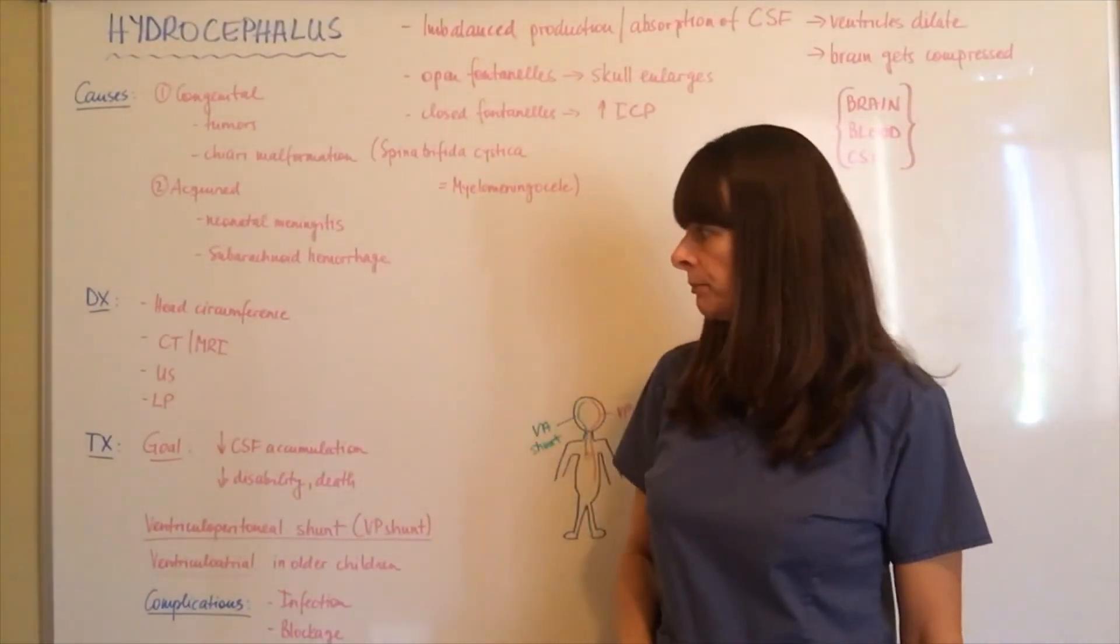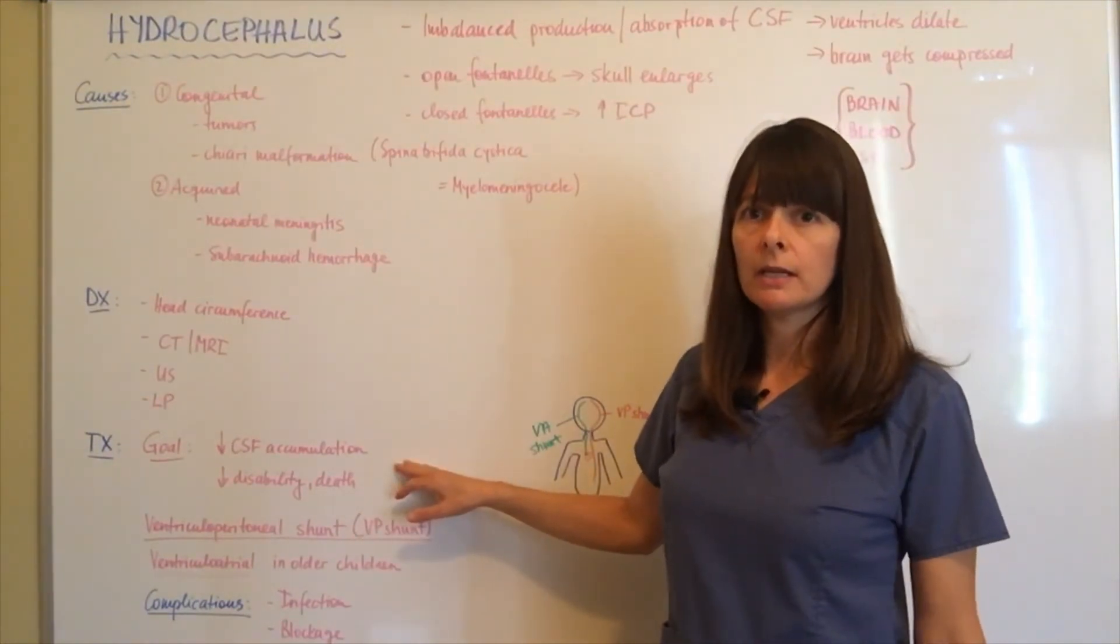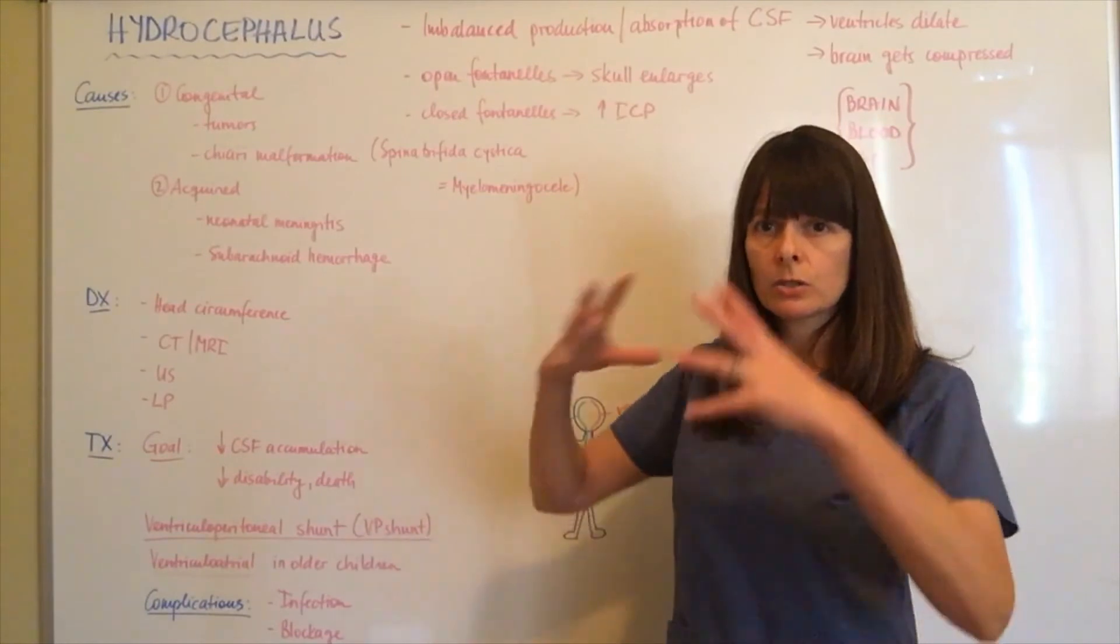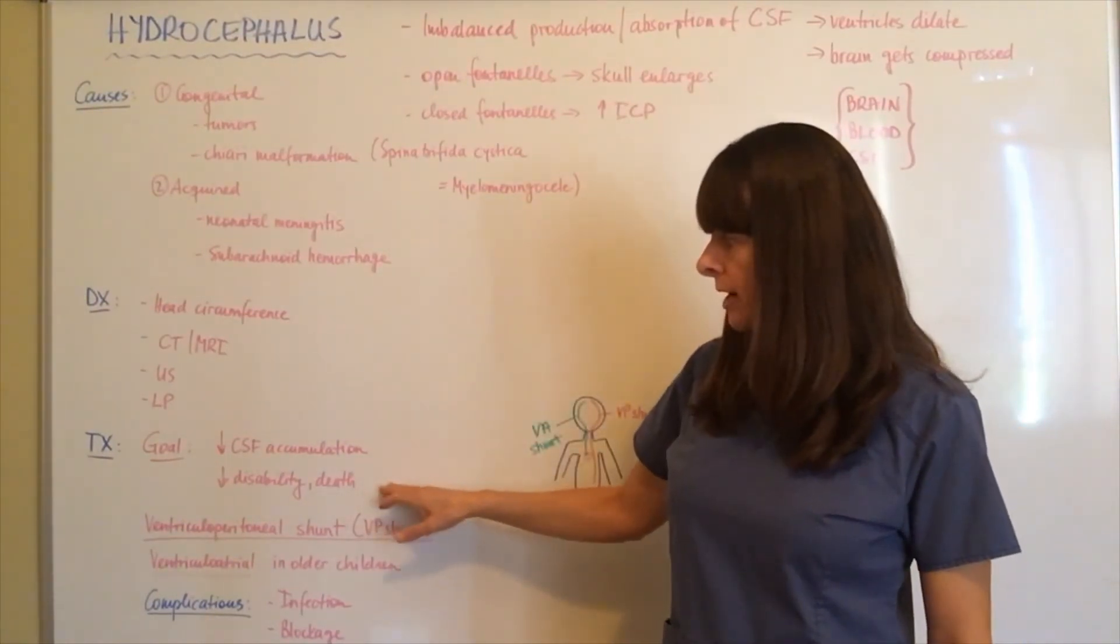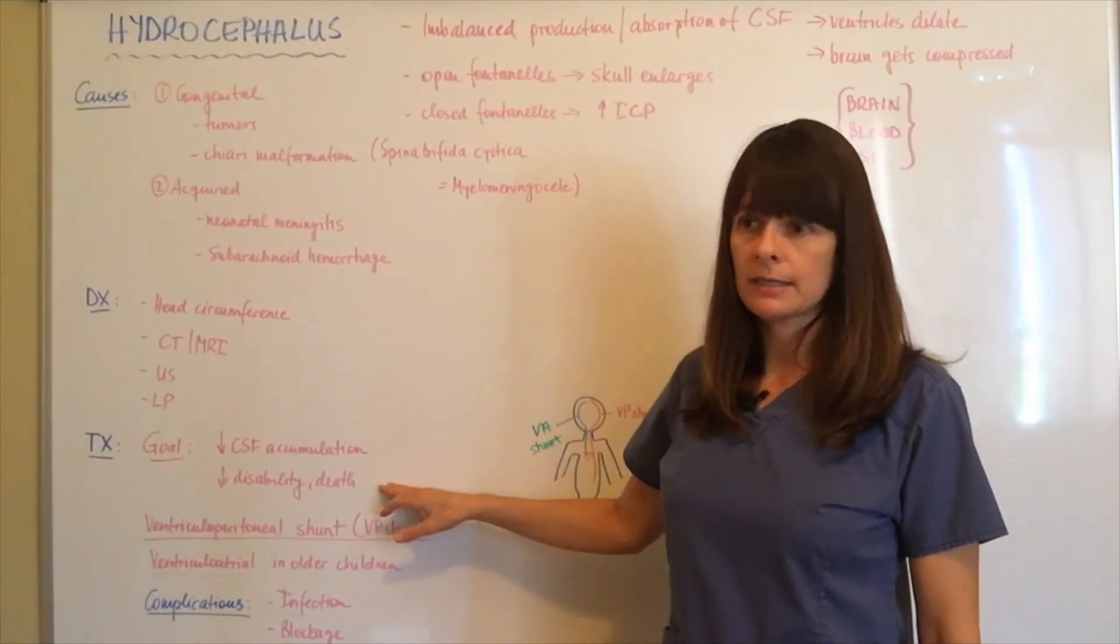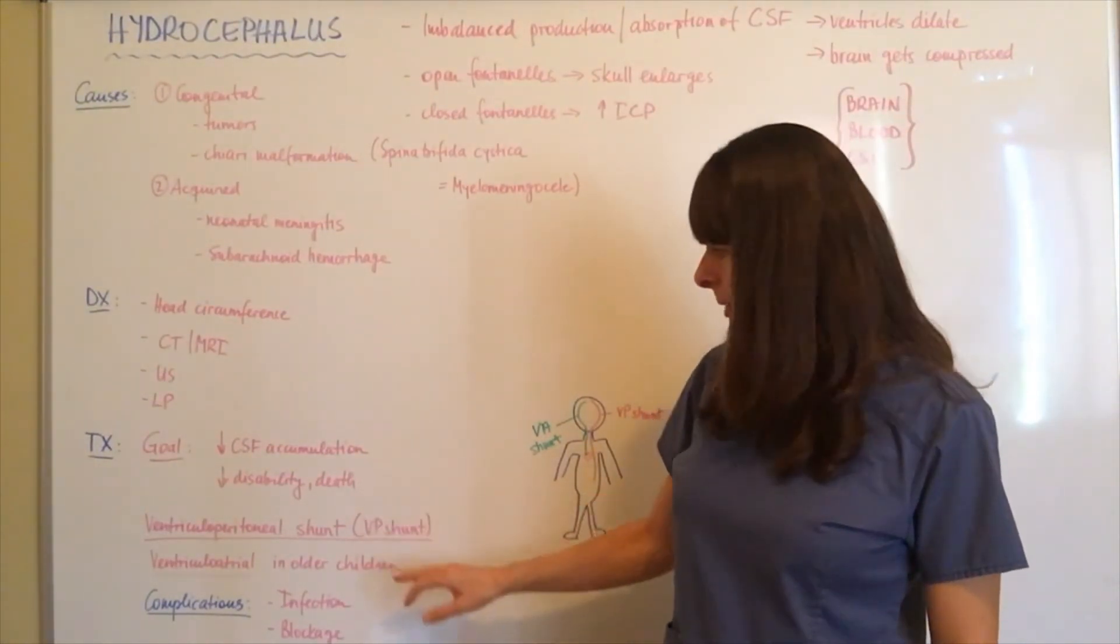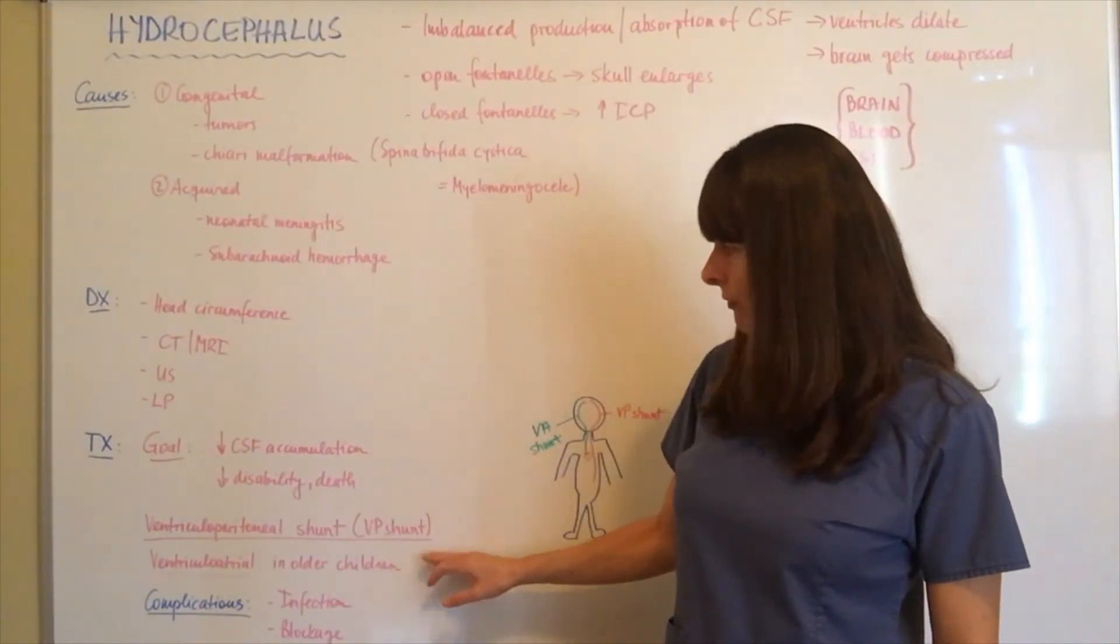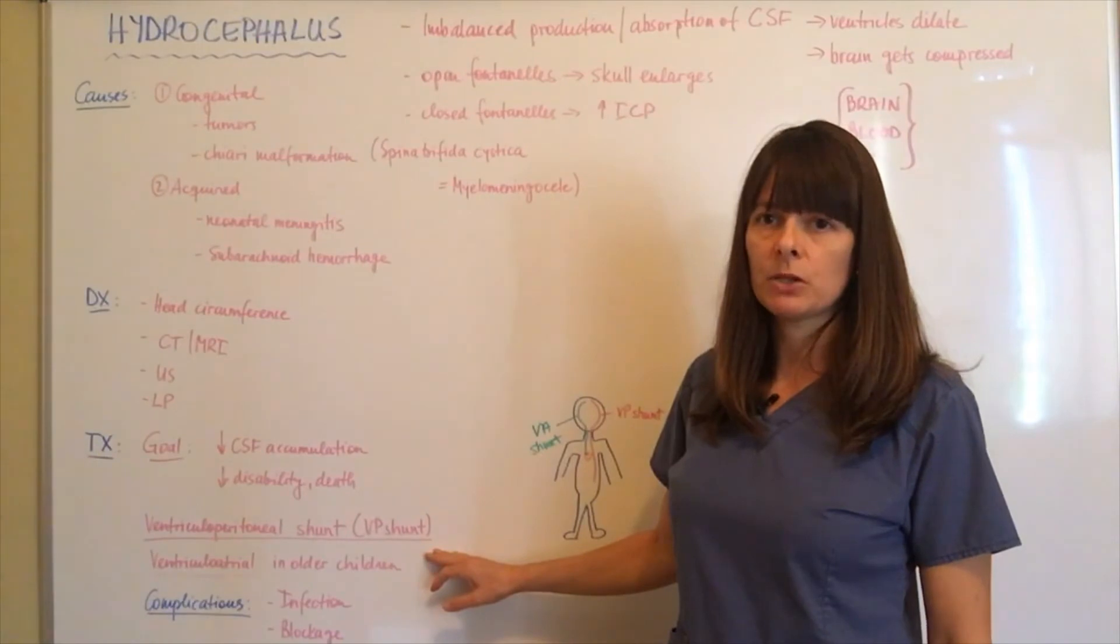The treatment goal for hydrocephalus is to decrease that CSF accumulation so that the skull cavity doesn't get enlarged, which helps to decrease disability and death. The way this is accomplished is by a ventriculoperitoneal shunt, or VP shunt.